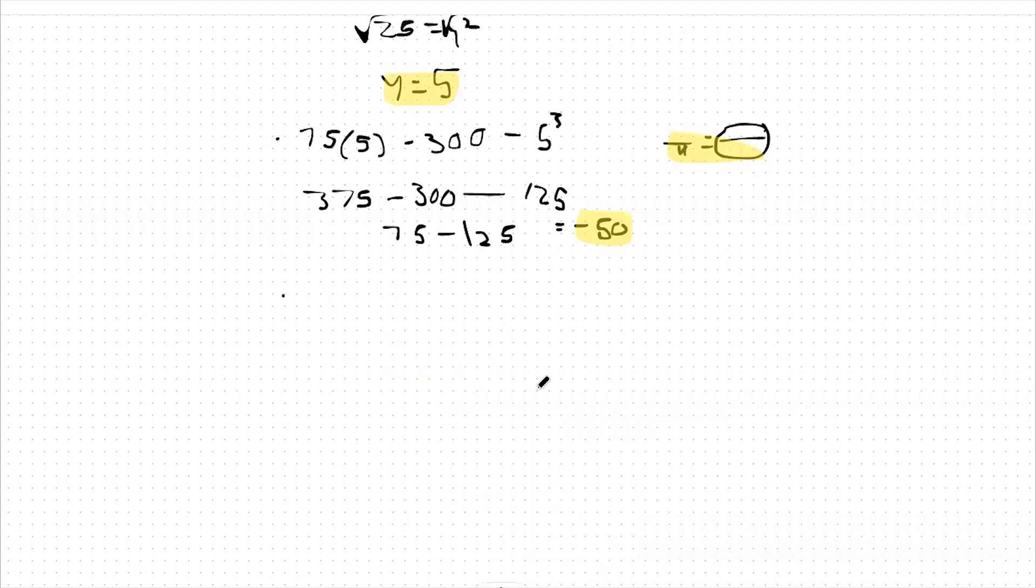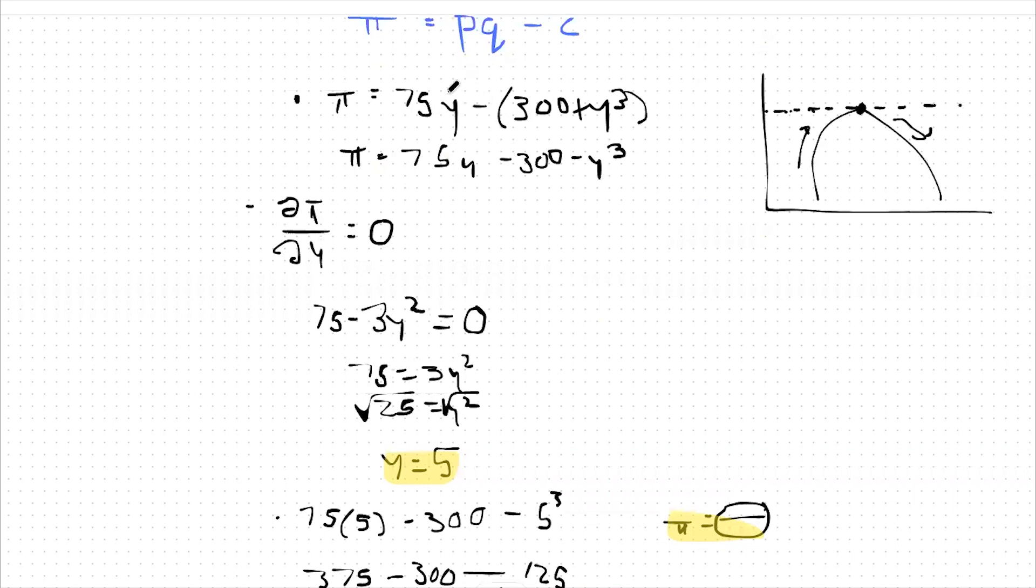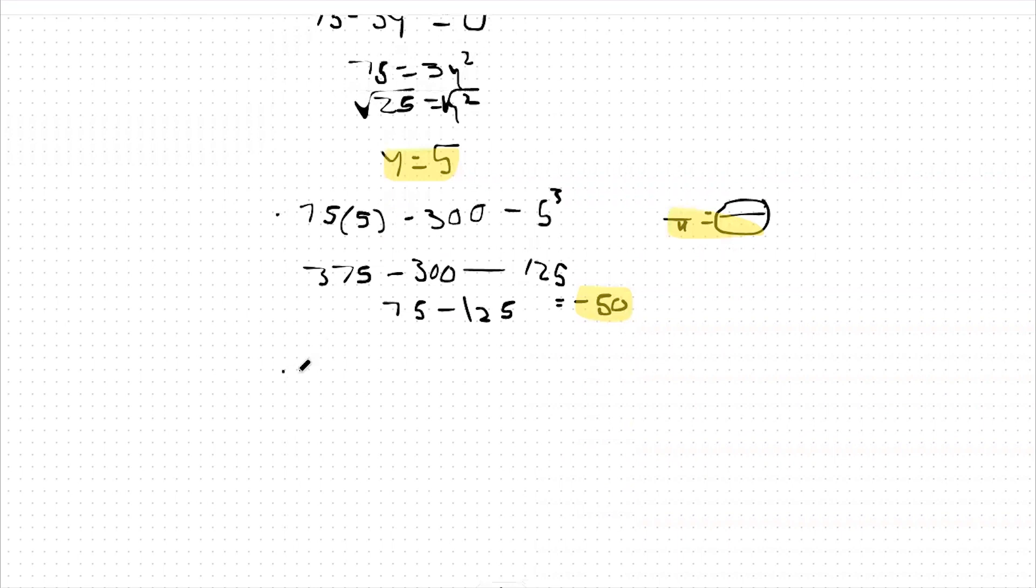In order to check that mathematically, we would plug in zero for our quantity at profit. If we get more profit when we produce zero items, then we should shut down. But if we get more profit at our profit maximizing point, then we should stay open. Let's take a look. 75 times zero minus 300 minus zero cubed. This leads us to a profit of negative 300 when we shut down.